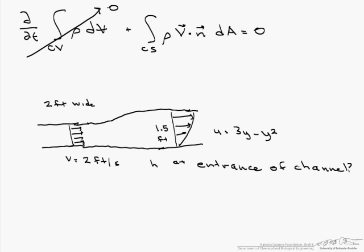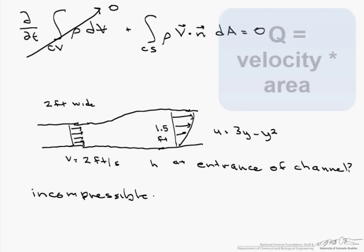So with an incompressible flow, what we can assume is Q1 equals Q2.